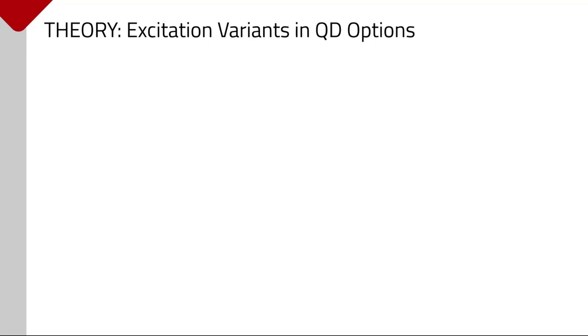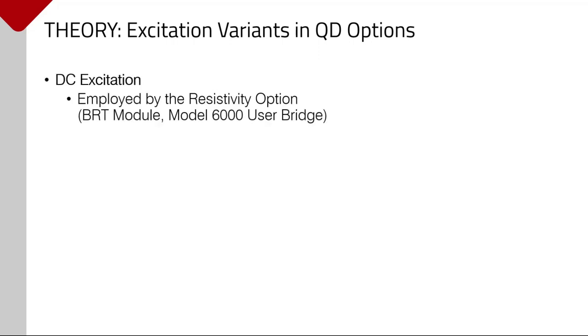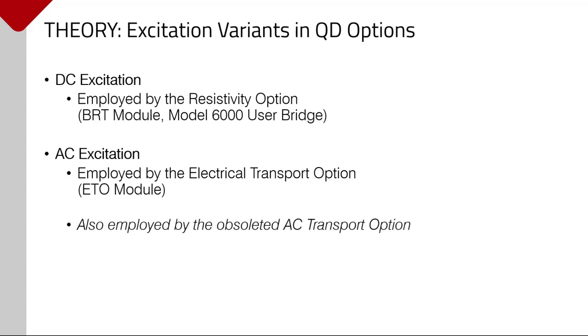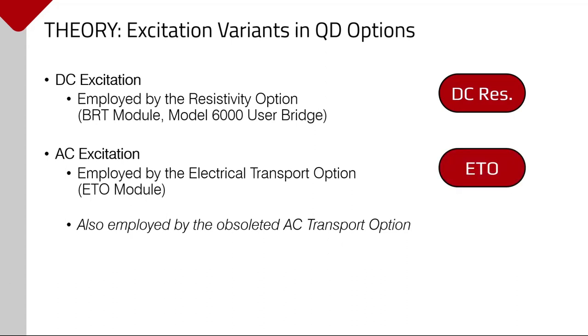Quantum design offers two measurement options which can quantify a sample's electrical resistance. We will compare and contrast these two tools throughout the talk, but the basic difference is the sample excitation mode. The resistivity option essentially employs a DC excitation. The hardware used for this is either the BRT module in CAN-based systems, or the user bridge card in systems with the legacy Model 6000 controller. The electrical transport option, or simply ETO for the remainder of the talk, in contrast uses an AC excitation and a more complex detection scheme. A similar setup was used by the now-obsoleted ACT for users familiar with that legacy option.